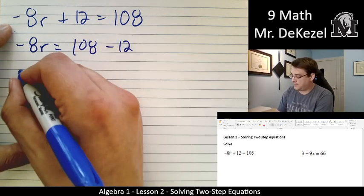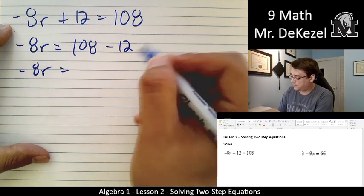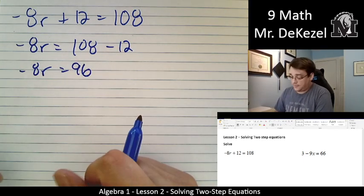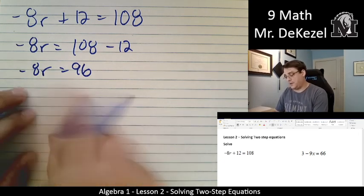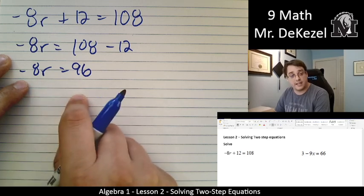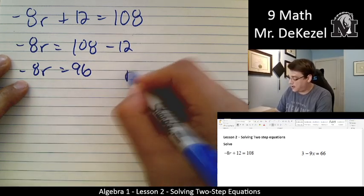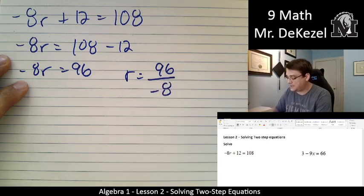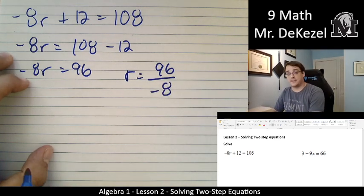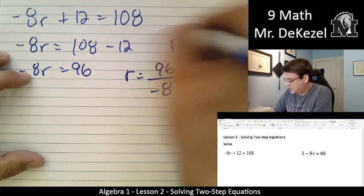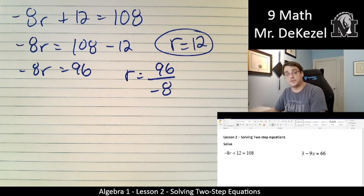So that means that minus 8r equals 96. I am then going to move the minus 8 to the other side, but it's multiplied by r this time. So when I move it across, I'm dividing it by minus 8. So r is equal to 96 divided by minus 8. And I believe that that is 12. So r, in this case, equals 12.